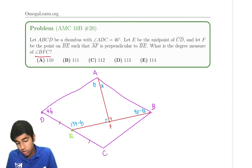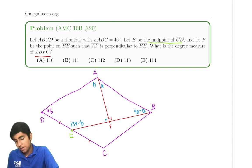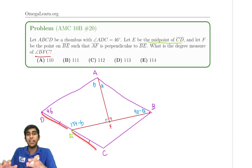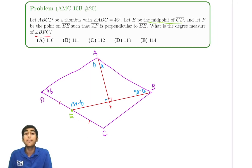But the weirdest condition is this midpoint condition. E is the midpoint of CD. I mean, this is an angle chasing problem. And it's not like there's isosceles triangles or anything. What does this midpoint condition mean? And the key idea for this problem is trying to figure out a way to use this midpoint condition.